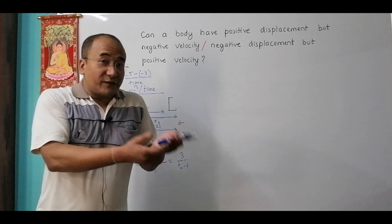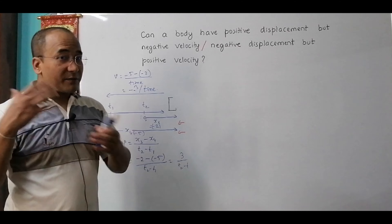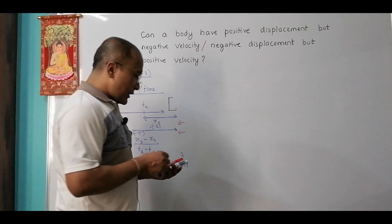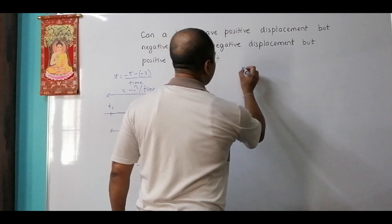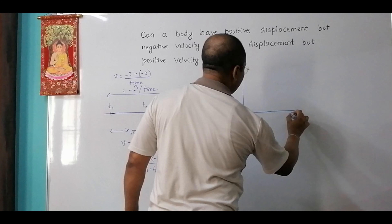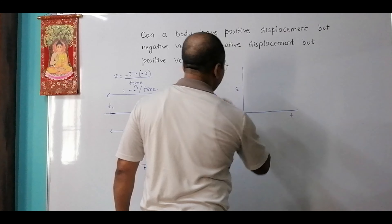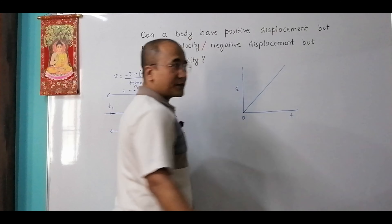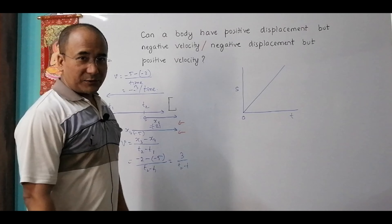These same ideas also apply to the relationship between velocity and acceleration — positive velocity with negative acceleration, and negative velocity with positive acceleration. This whole phenomenon can also be expressed graphically.